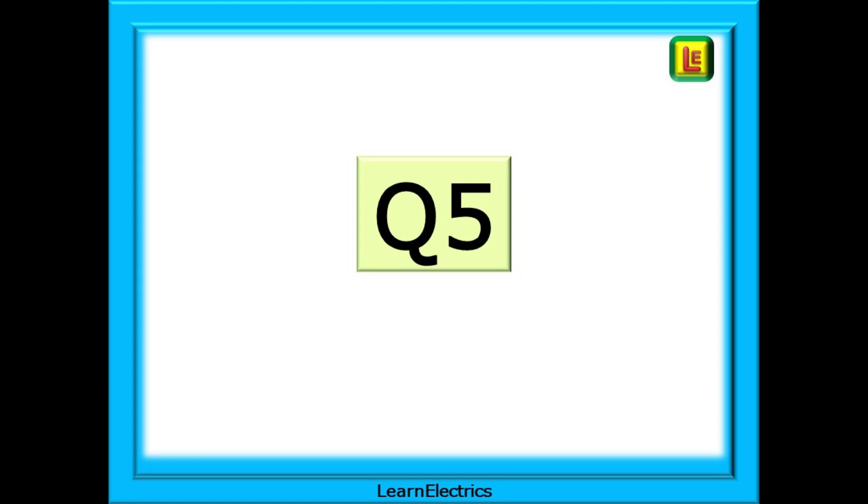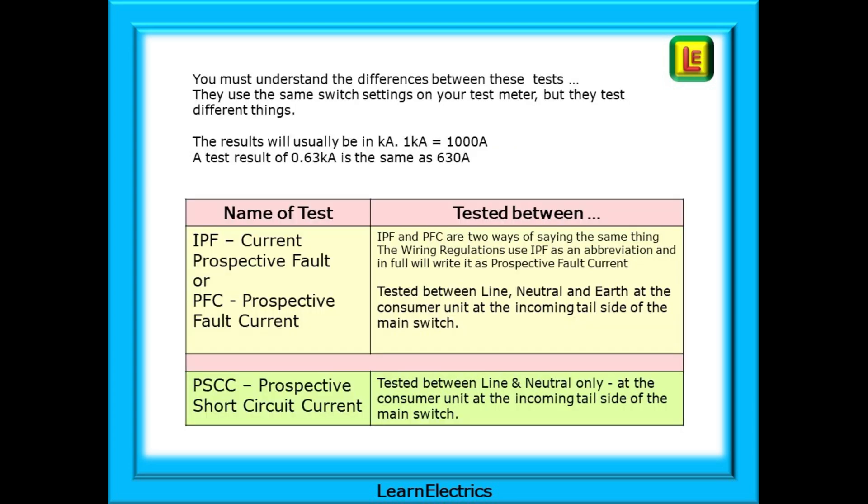Question 5 is next. Remember to pause the video after each question and attempt an answer. Before we look at the question, you must understand the differences between these tests. They use the same switch settings on your test meter, but they test different things. The results will usually be in kiloamps and 1 kiloamp is equal to 1000 amps. A test result of 0.63 kiloamps is the same as 630 amps.